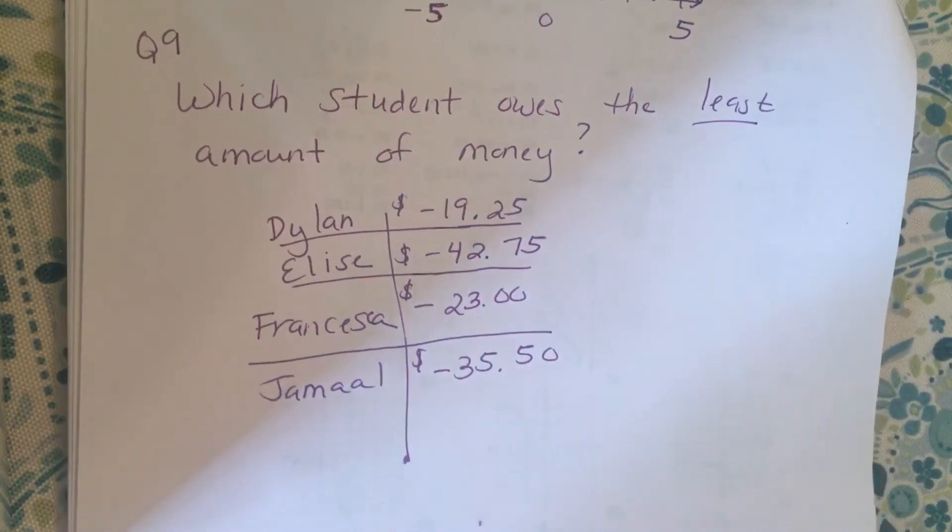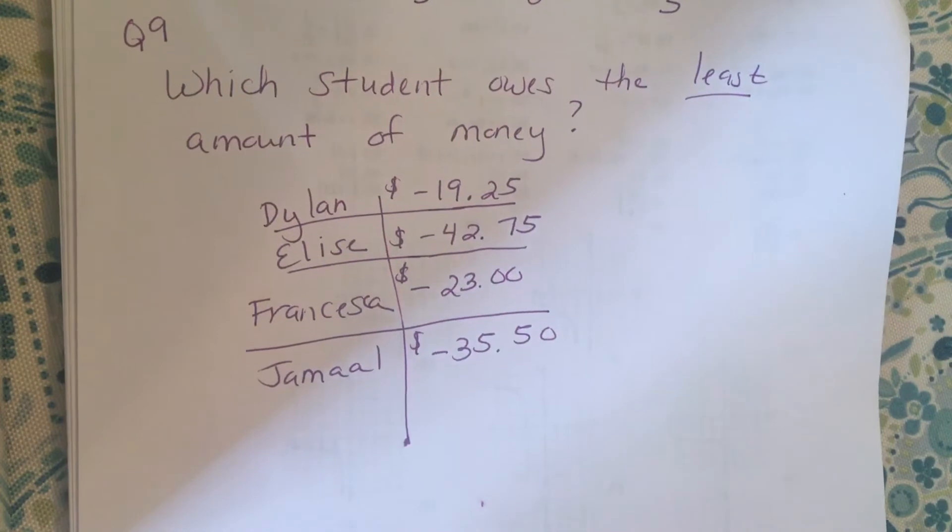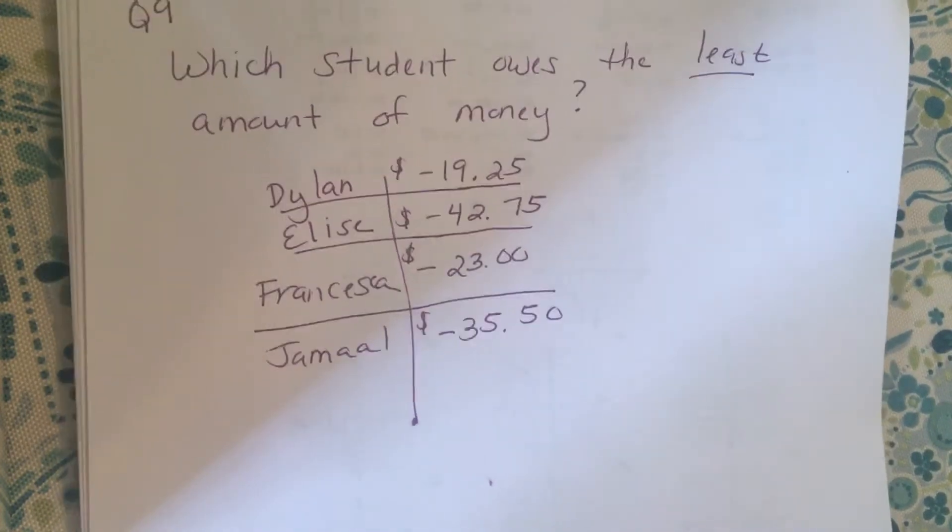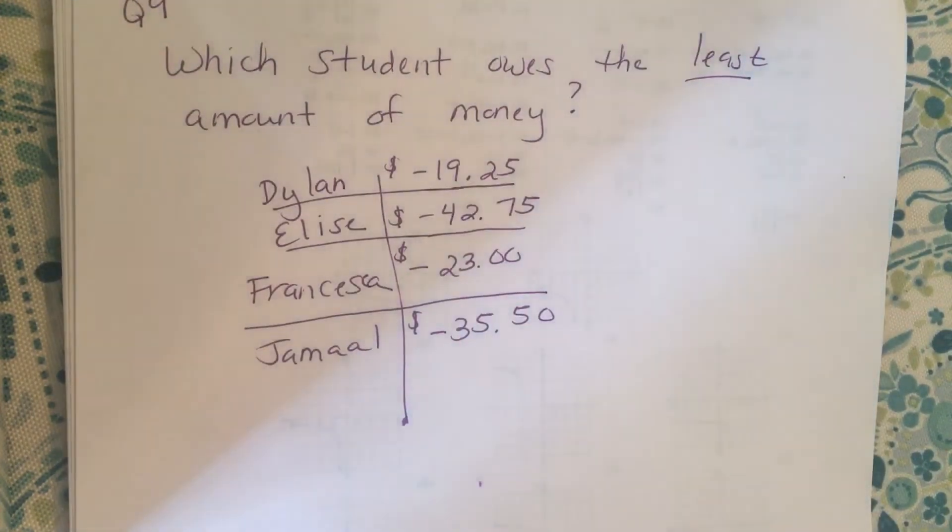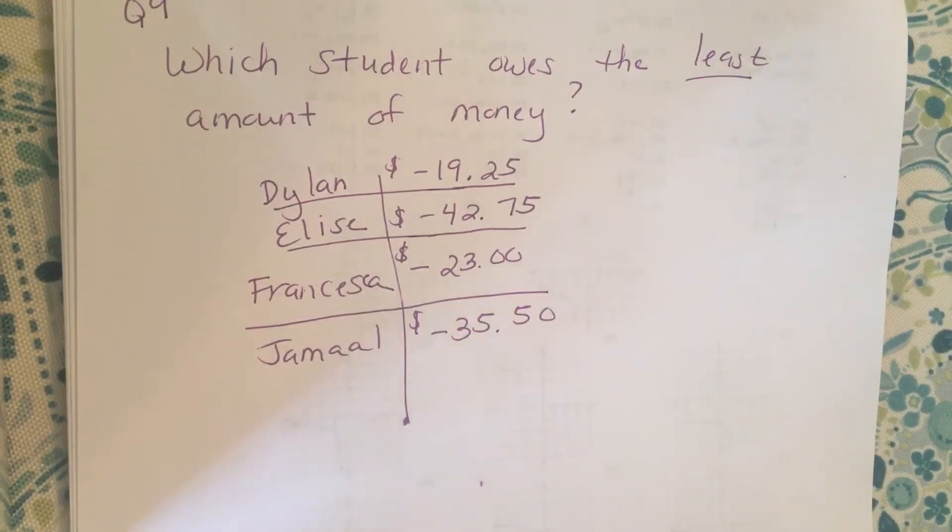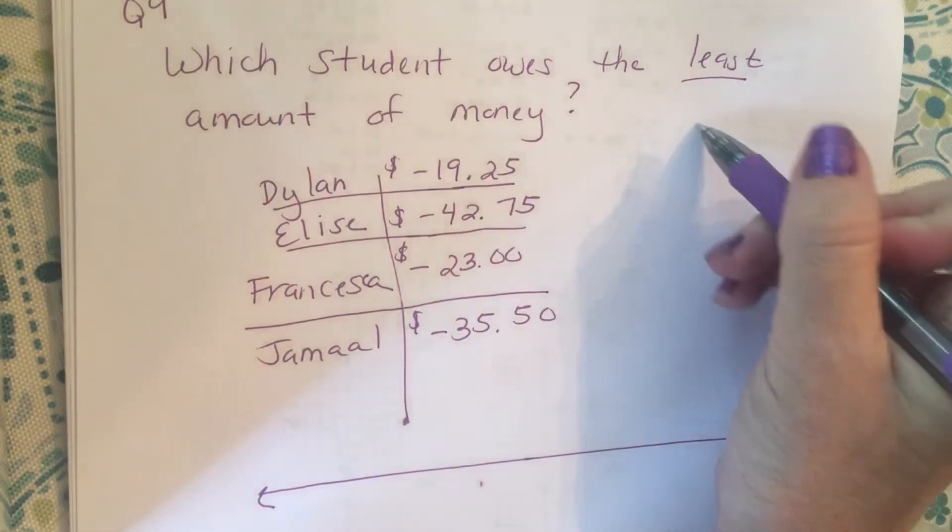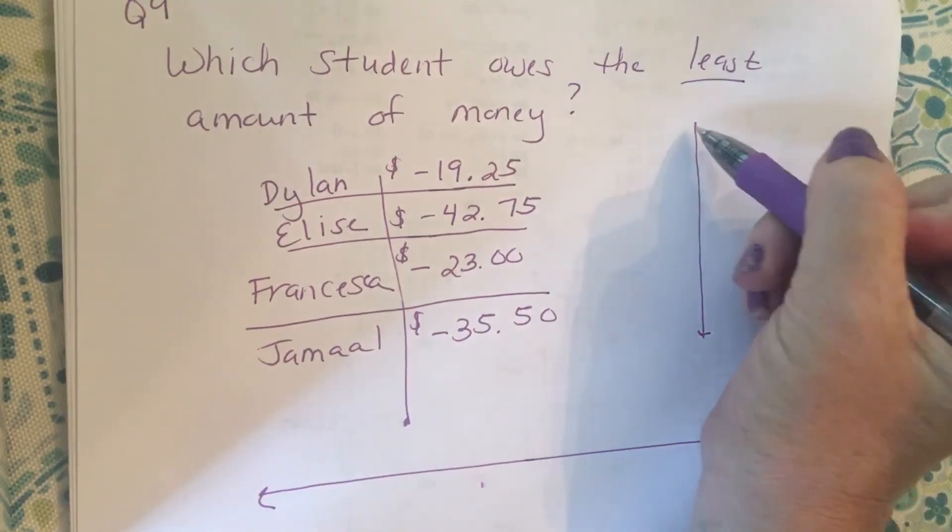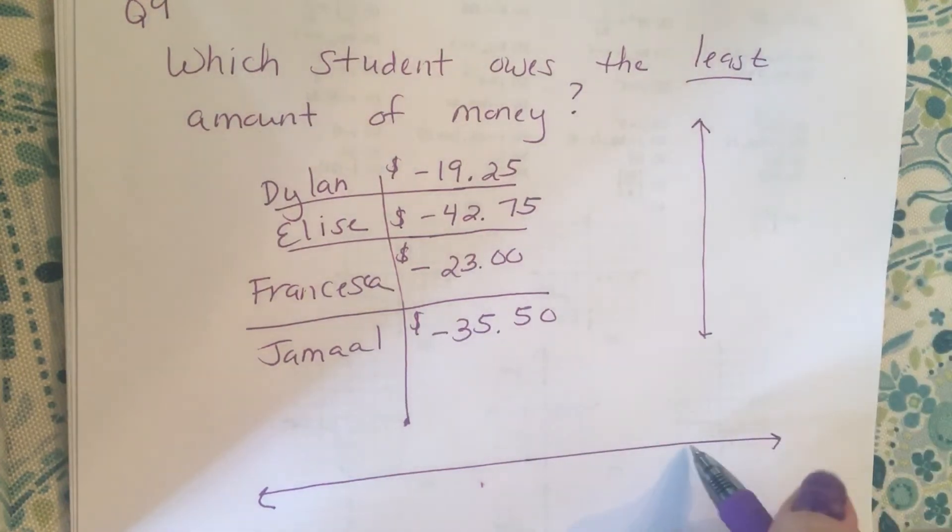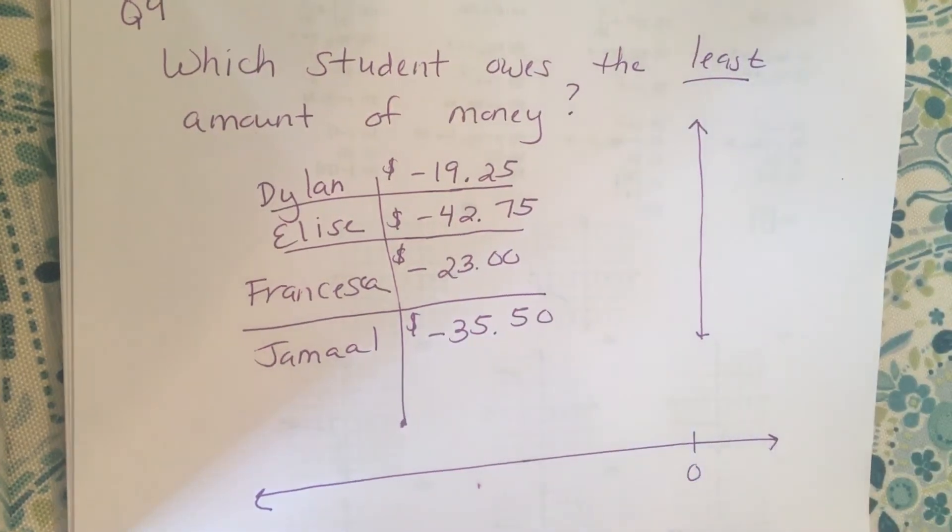And then another student asked about question nine: which student owes the least amount of money? Okay, so we need to know who owes the lesser of the negative numbers. If you're thinking about a number line, you can think of it vertically or horizontally, whatever makes the most sense to you.